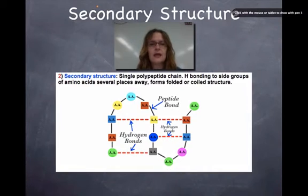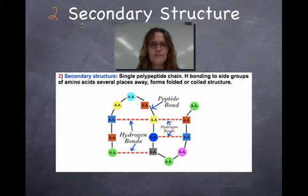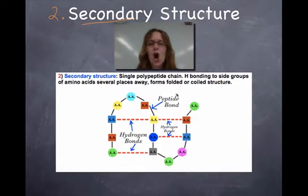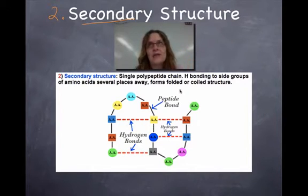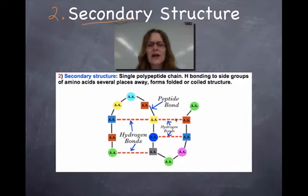The second level is called secondary structure. Secondary structure is the second level of protein structure, and that's when we get our first layer of interactions — the first beginnings of interactions between the side chains on the individual amino acids.